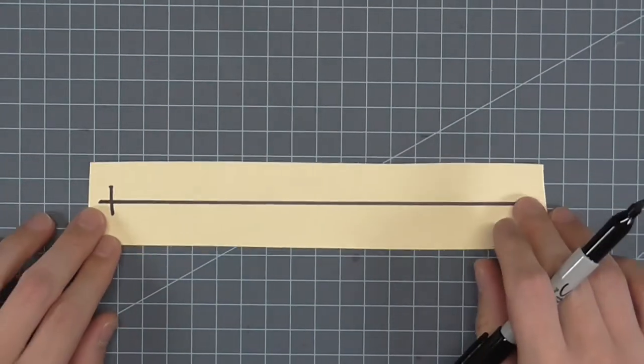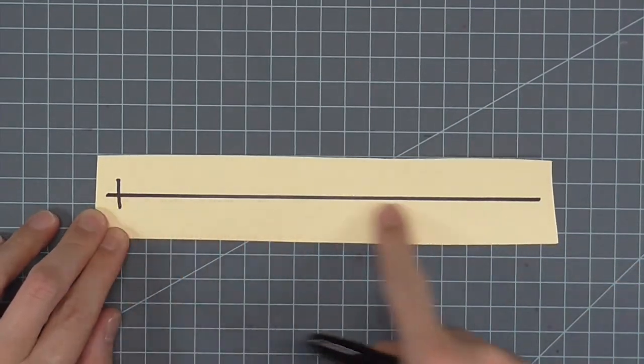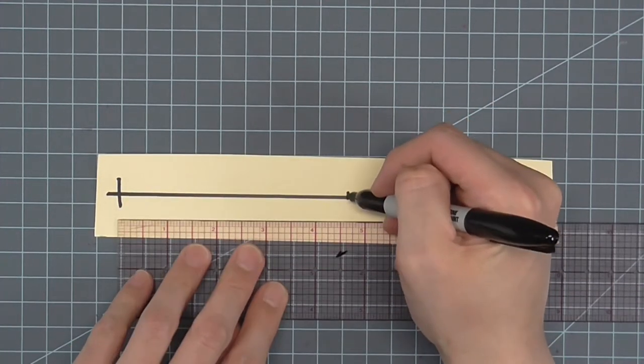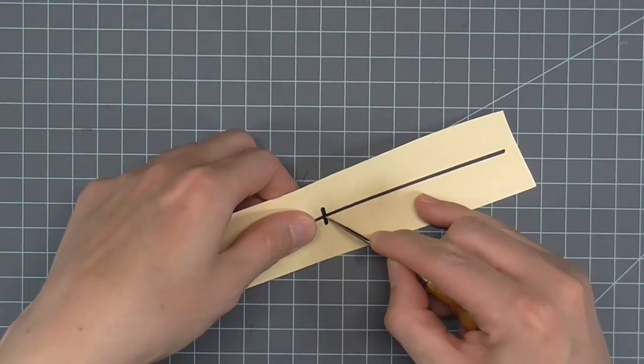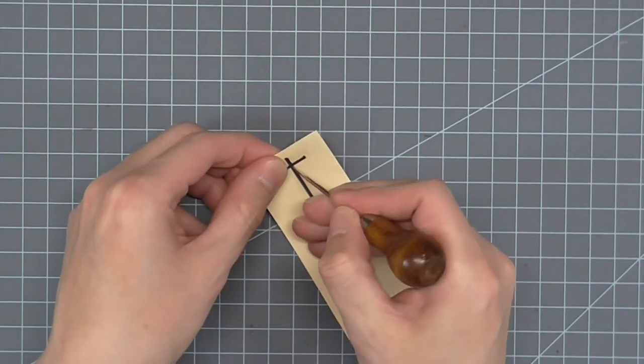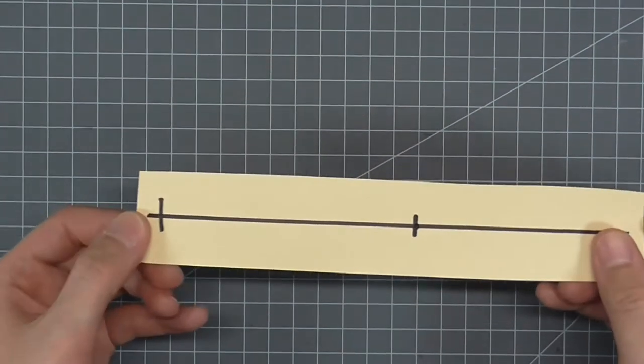On a scrap of oak tag or card stock, draw a straight line and mark one end. Measure the brim to center measurement. For me, that is 4 and 5 eighths inch. Make a hole big enough for your pencil to fit through and a smaller hole at the original mark for the pushpin.